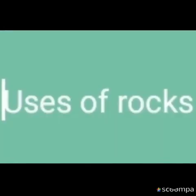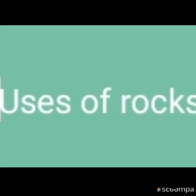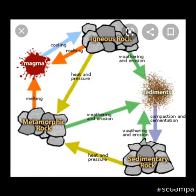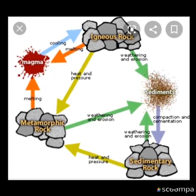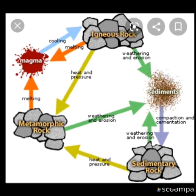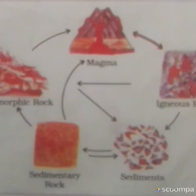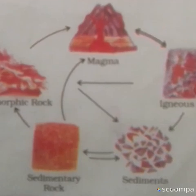Uses of rocks: Rocks are very useful to us. They are used for making roads, houses and buildings. Rock cycle: One type of rock changes to another type under certain conditions in a cyclic manner. This process of transformation of rock from one type to another is known as the rock cycle. When the molten magma cools, it solidifies to become igneous rocks. These igneous rocks are broken down into small particles, transported and deposited to form sedimentary rocks. When igneous and sedimentary rocks are subjected to heat and pressure, they change into metamorphic rocks. The metamorphic rocks, under great heat and pressure, melt down to form molten magma, which can again cool down and solidify into igneous rocks.